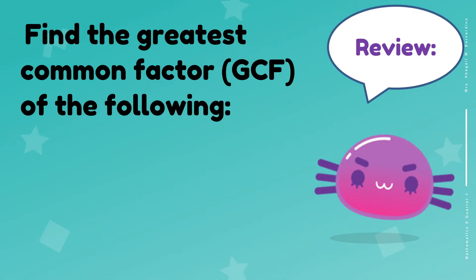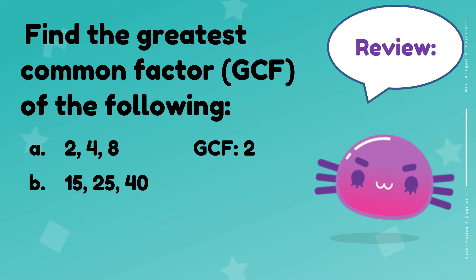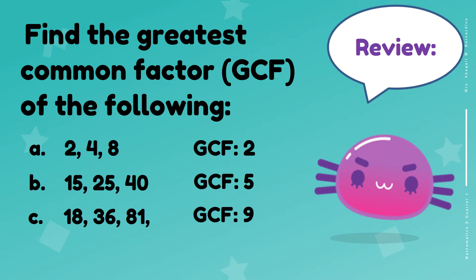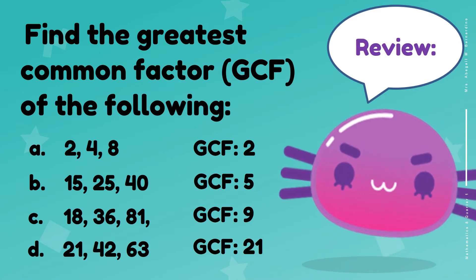Let's have a review. Find the greatest common factor of the following. Letter A: 2, 4, and 8 — the answer is 2. Letter B: 15, 25, and 40 — the GCF is 5. Letter C: 18, 36, and 81 — the answer is 9. And finally, 21, 42, and 63 — the answer is 21. Very good! You really know your GCFs — greatest common factors.